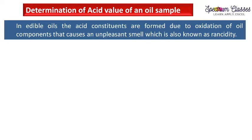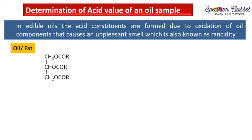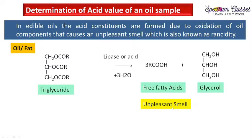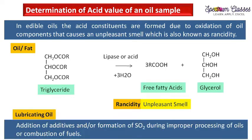In the context of edible oils, acid constituents are formed due to oxidation of oil components by enzymes, oxygen present in the air, or moisture, causing an unpleasant smell also known as rancidity. This is shown by the equation: triglycerides, in the presence of enzymes, acid, or moisture, are converted into three fatty acids and glycerol. Due to these free fatty acids, we get a very unpleasant smell in food items — this is termed rancidity.